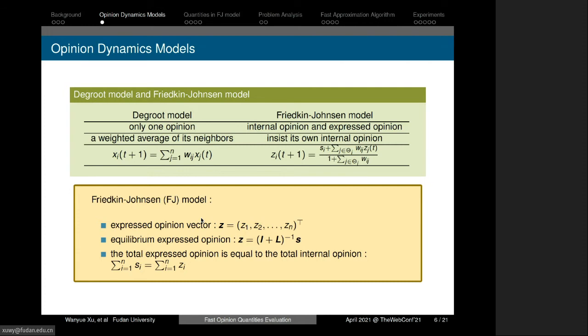In the Friedkin-Johnsen model, also called FJ model, everyone has two opinions: internal opinion and expressed opinion. People have internal opinion in mind but show expressed opinion to others. At the beginning of the opinion dynamics, the expressed opinion equals the internal opinion. Along with communication, one is influenced by neighbors and changes their expressed opinion. In FJ model, people insist on their internal opinion to some extent.